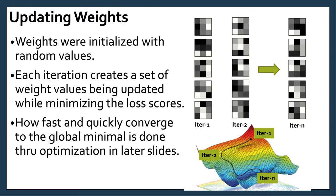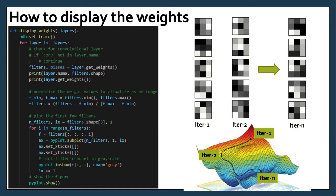To update the weights, first, if we have no weights, we assign random values. Then, each iteration would create weight values to update. The activation function would try to minimize the loss scores and the optimizer would update the weights. It also defines how fast and quickly converge to the global minimal is done through optimization. Here's the code that you can try to run. It will basically loop over all the layers and have the filters and the biases, the weights, the input and the weights. You can print that out. You want to normalize them to visualize as an image. You want to plot the first filters as well and then show it afterwards.